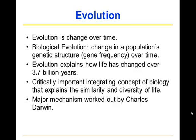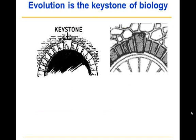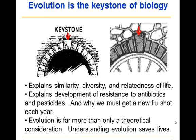A major mechanism of evolution was worked out by Charles Darwin. Evolution is the keystone of modern biology. The keystone, as you can see here, is an element of classical architecture — all the vector forces point right at this keystone, and if you pull it out the arch will collapse. And so it is with modern biology: evolution is the integrating theme, underlying virtually all other concepts of biology.